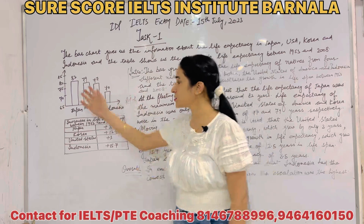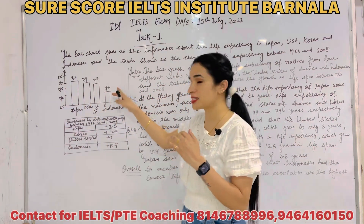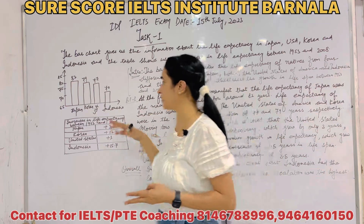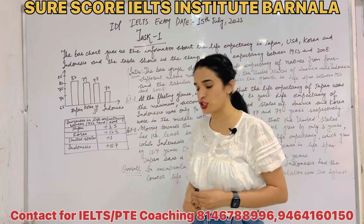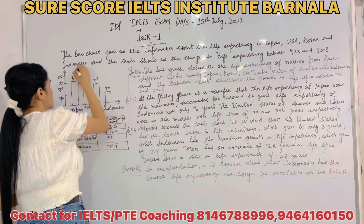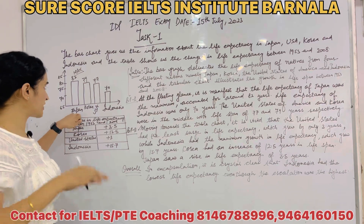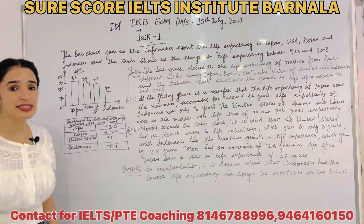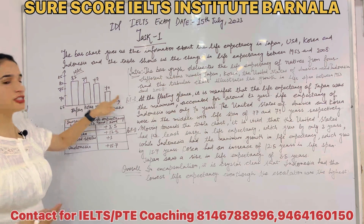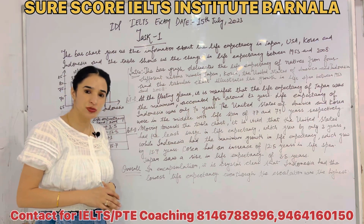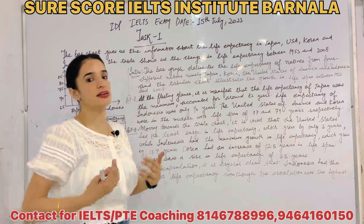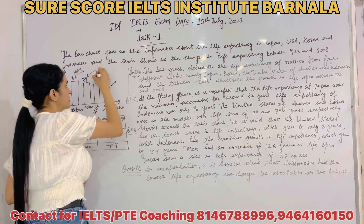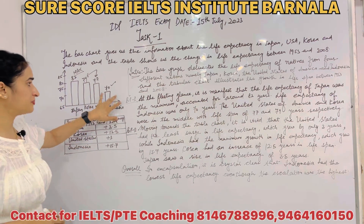You have to first do planning for your task — how you are going to start it. I will make three sentences from the bar graph and another three sentences for the tabular chart. For the bar graph, you have to start with the maximum value. I will start with the maximum, which in the case of Japan was 82 years. I will write independently and then the two middle ones respectively.